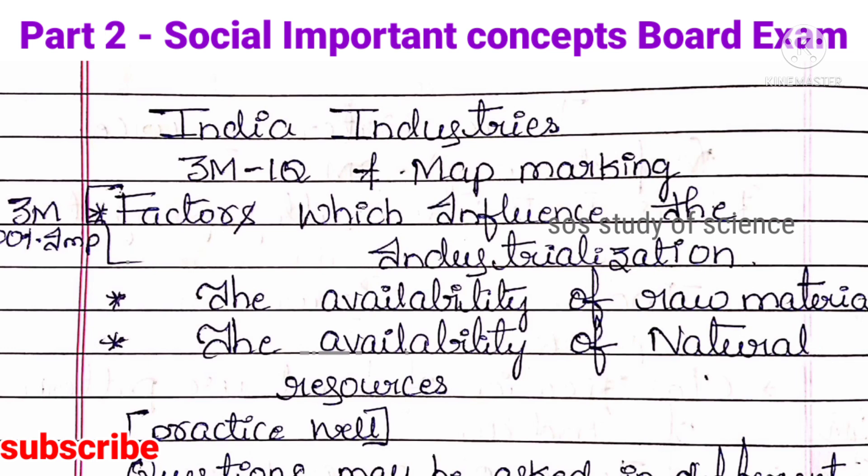Moving to the next lesson — India Industries. Here you can expect one 3-mark question and also a map marking. The 100% important question is: Factors which influence industrialization. Other very important topics include the availability of raw materials and the availability of natural resources. Questions may be framed in different ways but will be based on these same concepts.